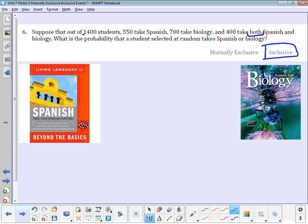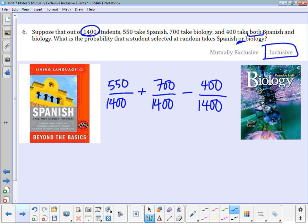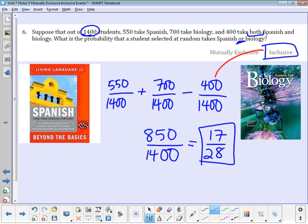First of all, 1,400 students total. If I want to find the probability that a student is in either Spanish or Biology, then I need to look at the three separate probabilities. I have 550 out of 1,400 that take Spanish, 700 out of 1,400 that take Biology. But I have 400 that were counted in both, so I have to take those 400 away. 550 plus 700 minus 400 is 850 out of 1,400. I can reduce this fraction down to 17 out of 28. Since there were people counted in both categories, I had to take them away because I can't count the same person twice.